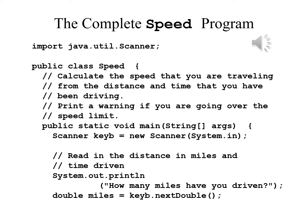We declare the Scanner: Scanner keyboard equals new Scanner(System.in) semicolon. The first comment reads: read in the distance in miles and the time driven. System.out.println 'How many miles have you driven?' Then double miles equals keyboard.nextDouble() semicolon.